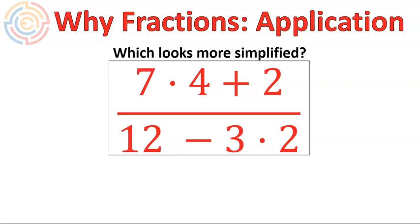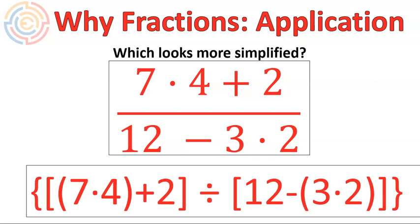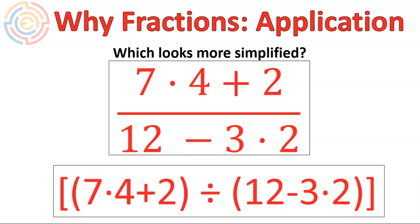I have this one where you would look at the numerator, 7 times 4 plus 2, simplify that. And then you have your denominator 12 minus 3 times 2, and you would simplify that. And then you would divide. To write this out as just a statement all written out in one line, it would look like this. Or it could be simplified a little bit down to being that.